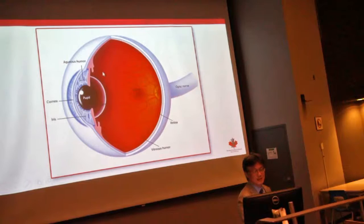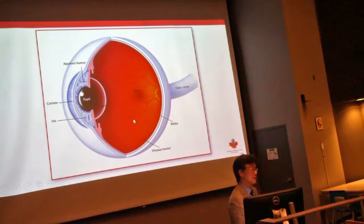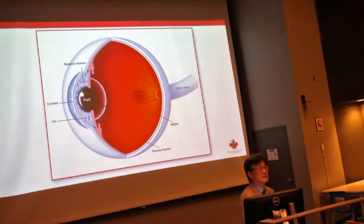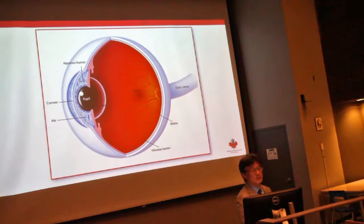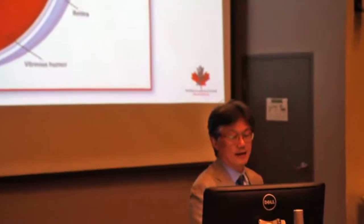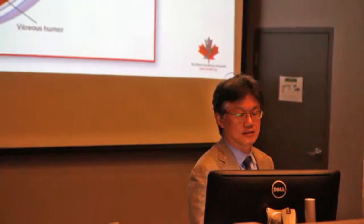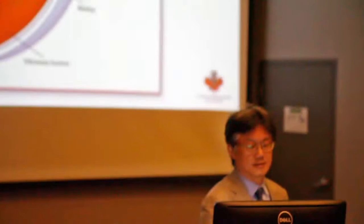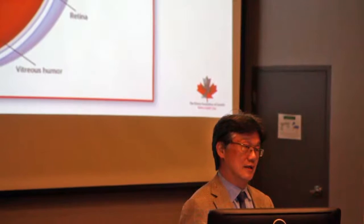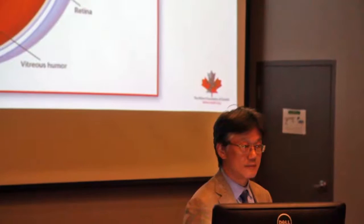Beyond the lens is this big cavity — not quite empty, but filled with a substance that looks like a jelly. It's called vitreous. A lot of diseases, including diabetic retinopathy, affect this jelly-like substance, and we would need to do surgery called vitrectomy, removing this jelly-like substance from inside the eye. Usually in your youth, that jelly is like a jelly ball that conforms to the surface of the retina.